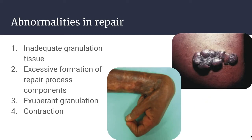Complications in tissue repair can arise from abnormalities in any of the three basic components of the process, including deficient scar formation, excessive formation of repair components, and the formation of contractures. Inadequate formation of granulation tissue or a scar can lead to either dehiscence or ulceration. Dehiscence is the rupture of a wound; excess mechanical stress from coughing or abdominal surgery can cause this. Ulceration can also occur if there is inadequate vascularization during healing, for example in lower extremity wounds in people with atherosclerotic vascular disease.